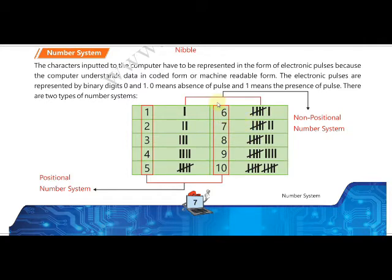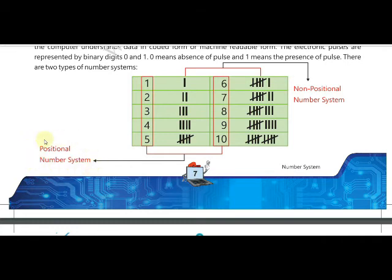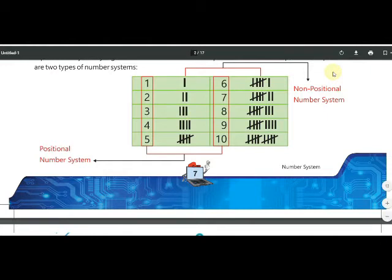There are two types of numbering systems: the positional numbering system and the non-positional numbering system. Currently we use the positional numbering system because it allows us to calculate and understand the exact size or quantity of a particular thing. The non-positional numbering system is an ancient method used by people — often illiterate or uneducated people — to show the size of a particular group, but calculation was not possible with it.